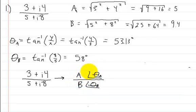Now, A as we said before is 5, so this is going to be equal to 5 with an angle of 53.13 degrees. The one on the bottom, which was B, is 9.4. So we're going to get 9.4 with an angle of 58 degrees.